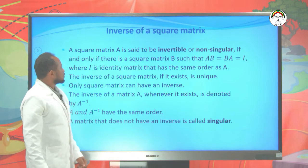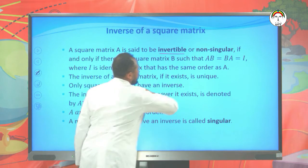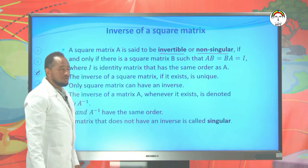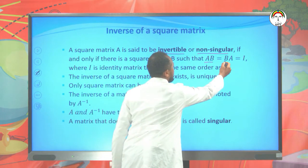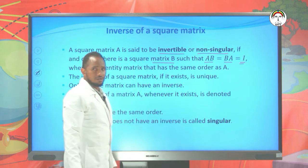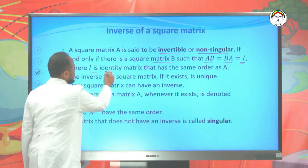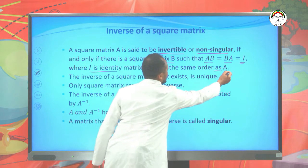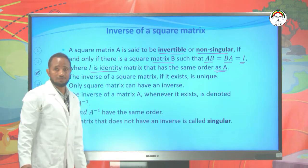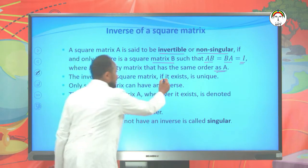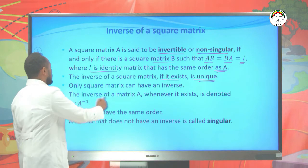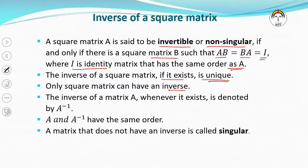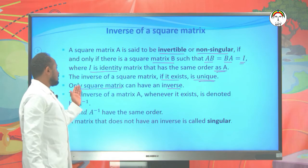Let's proceed to the lesson. A square matrix A is said to be invertible or nonsingular if and only if there is a square matrix B such that the product A times B and B times A gives you the identity matrix, where the identity matrix has the same order as A. The inverse of a matrix, if it exists, is unique, and only a square matrix can have an inverse.